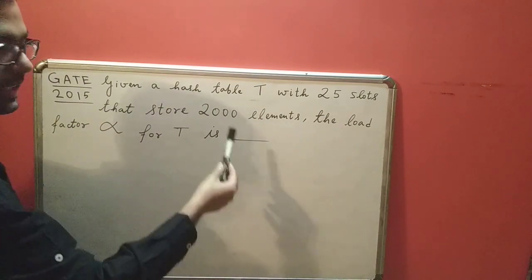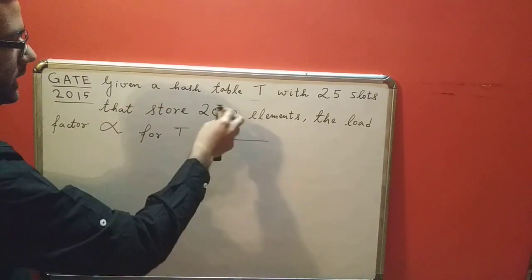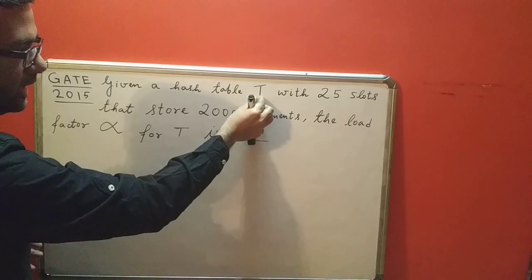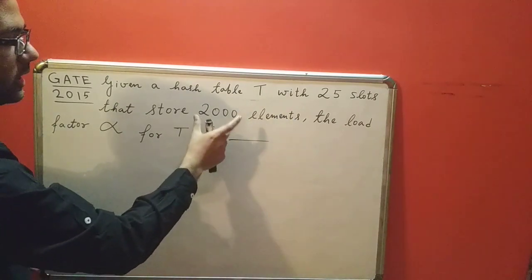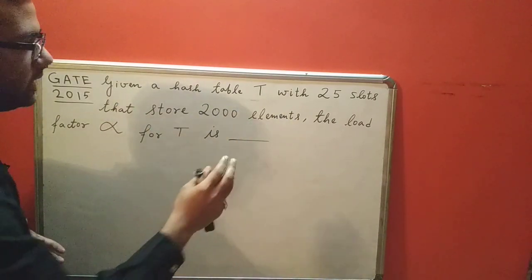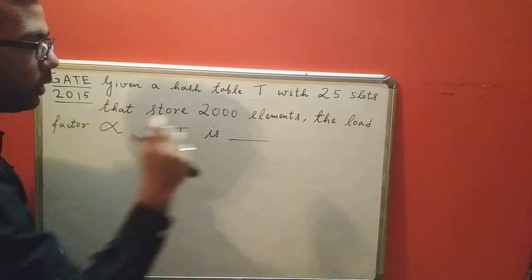It's not at the same time. This table T will be able to accommodate 2000 elements, 2000 different elements, but not at the same time. At one point of time it will be able to accommodate only 25 elements.